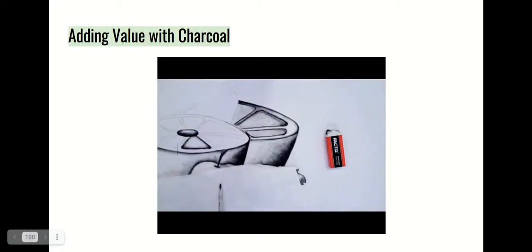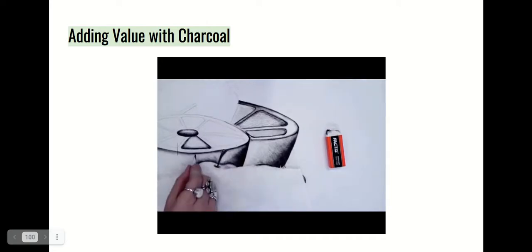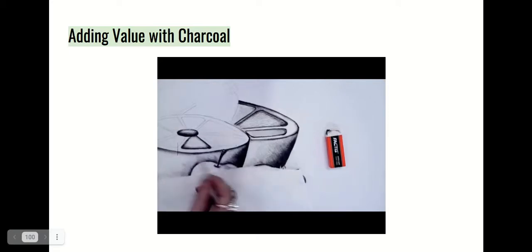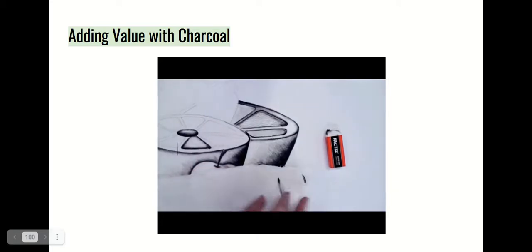These are some quick tips on adding value and blending. Always start off light — you can always apply more dark or more graphite to your drawing. It's important to do that because if you start going crazy with the darks, it's going to become a really, really dark piece.